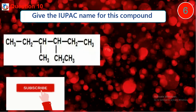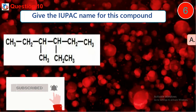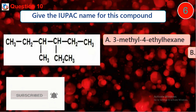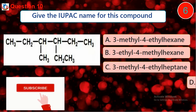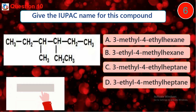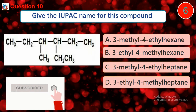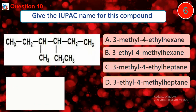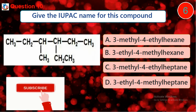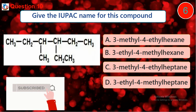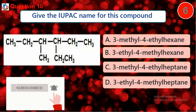Question 10. Give the IUPAC name for this compound. A. 3-methyl-4-ethyl-hexane. B. 3-ethyl-4-methyl-hexane. C. 3-methyl-4-ethyl-heptane. D. 3-ethyl-4-methyl-heptane.